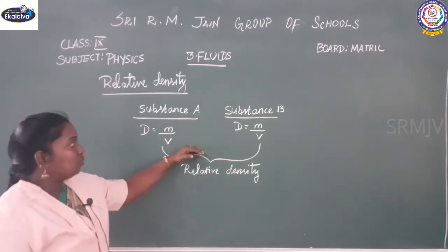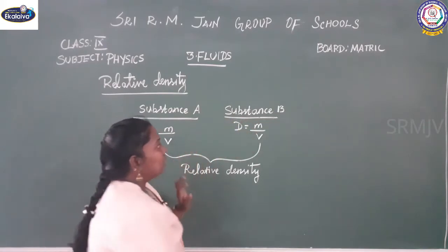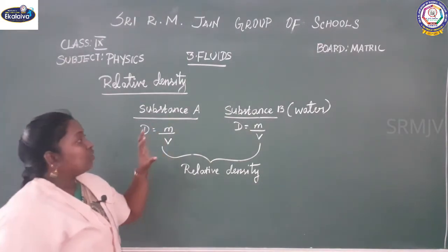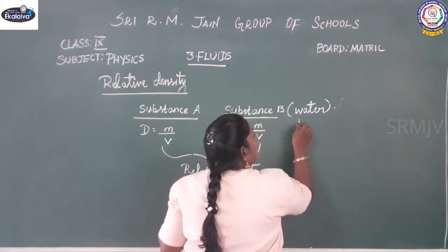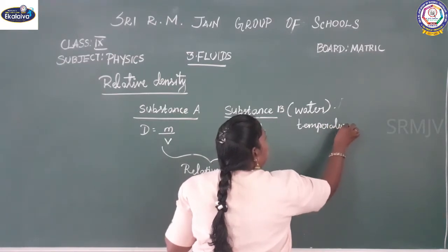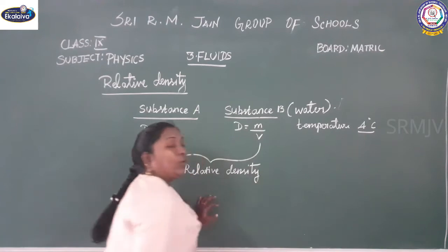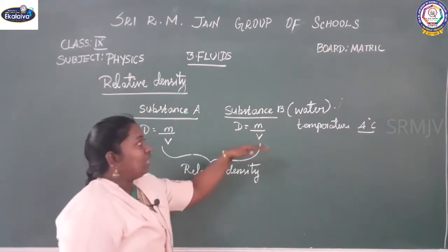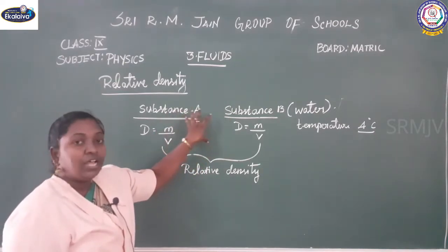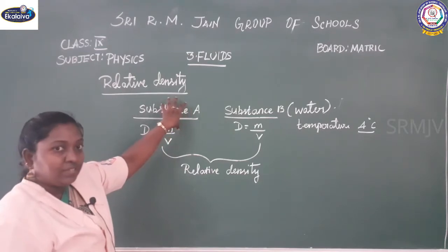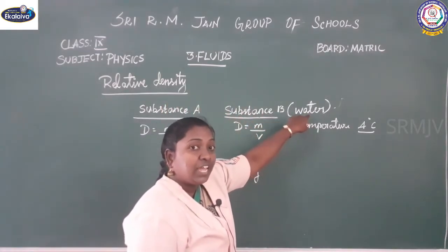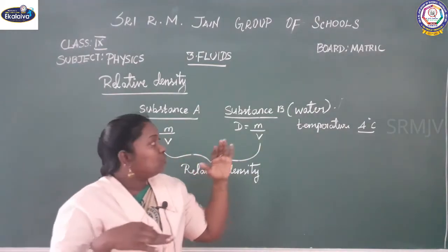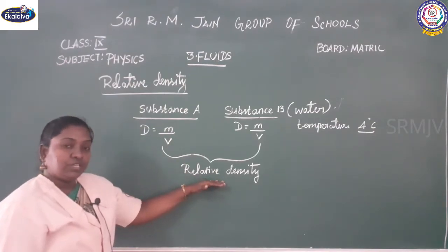Substance A can be any substance. If substance B is water, it should maintain a temperature of 4 degrees Celsius. When the temperature of water increases, its density decreases. So when comparing two different substances with water, the water temperature should remain constant at 4 degrees Celsius. Comparing these two gives you the relative density of a substance.